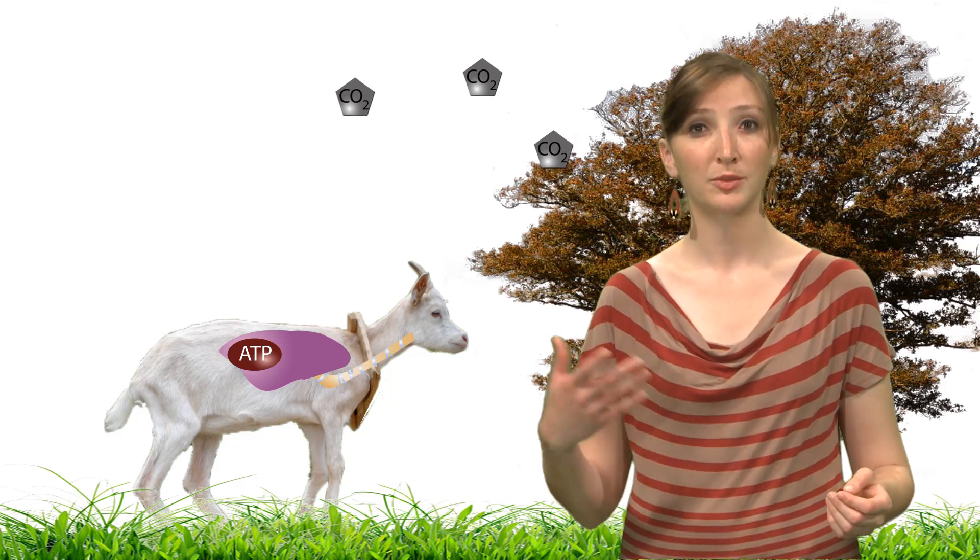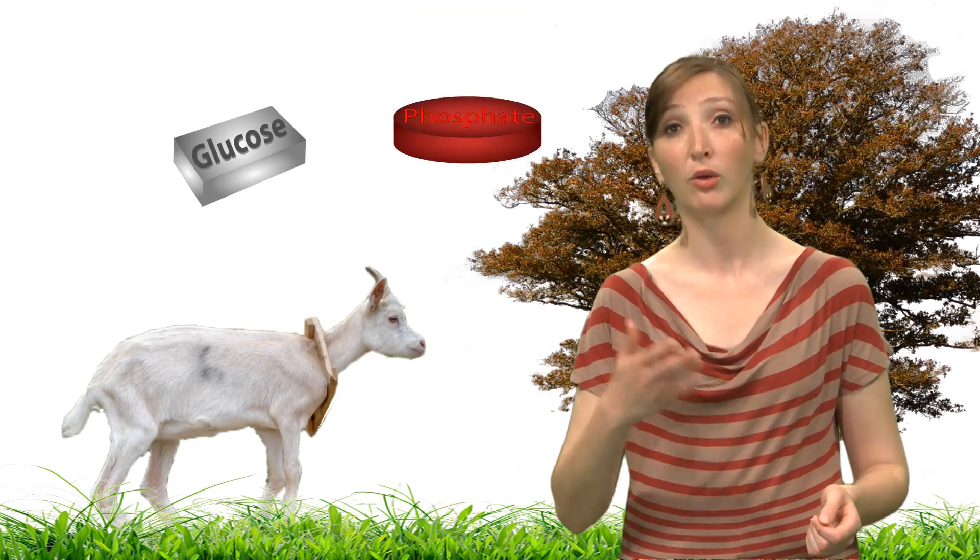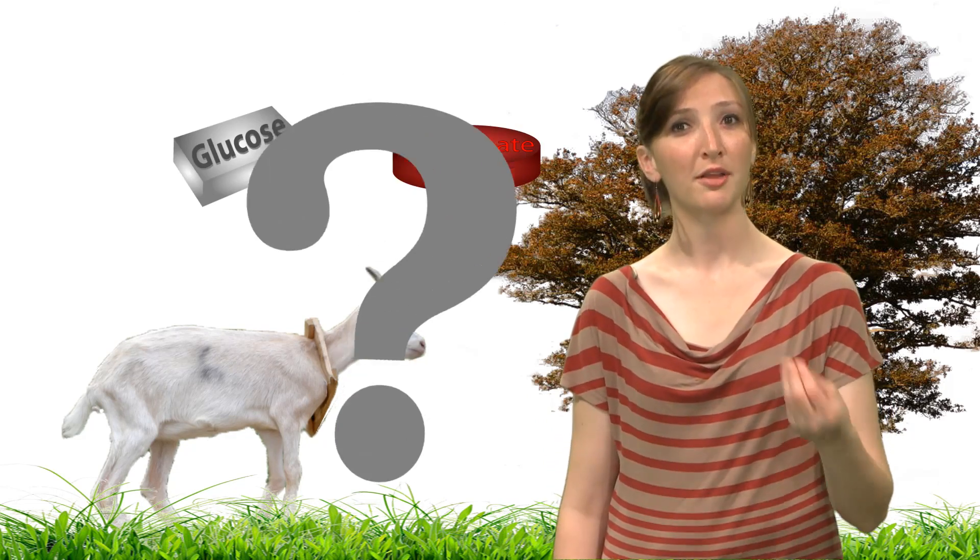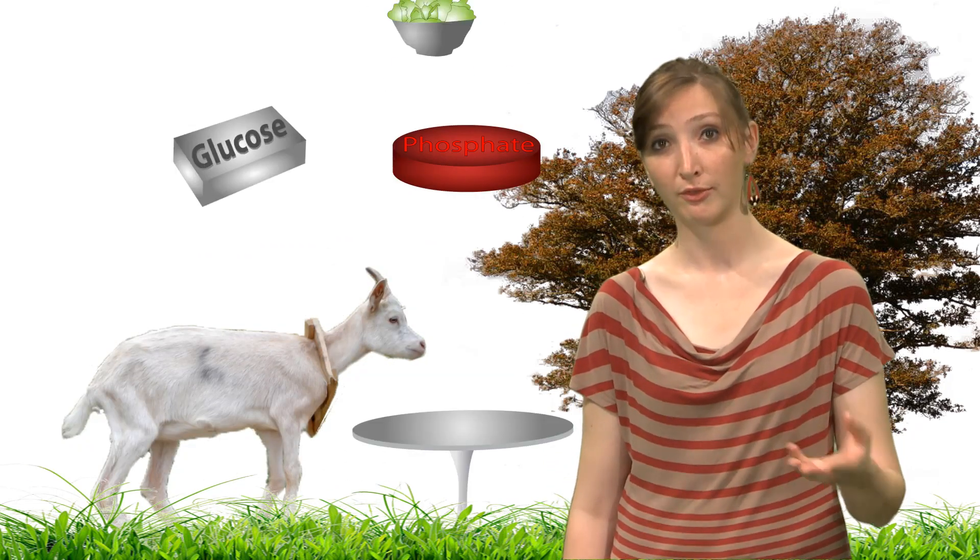Thus, the breathing of living organisms transforms the oxygen of the air into CO2. In order for the breathing to lead to the production of ATP, we have seen that glucose and phosphate are also necessary. Where are they coming from? From food, of course.